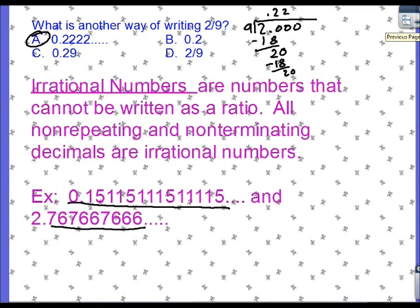All right. Also, if we take a look at this, we should know that pi, that's our symbol for pi, is an irrational number because that's a decimal that goes on forever and never repeats itself.